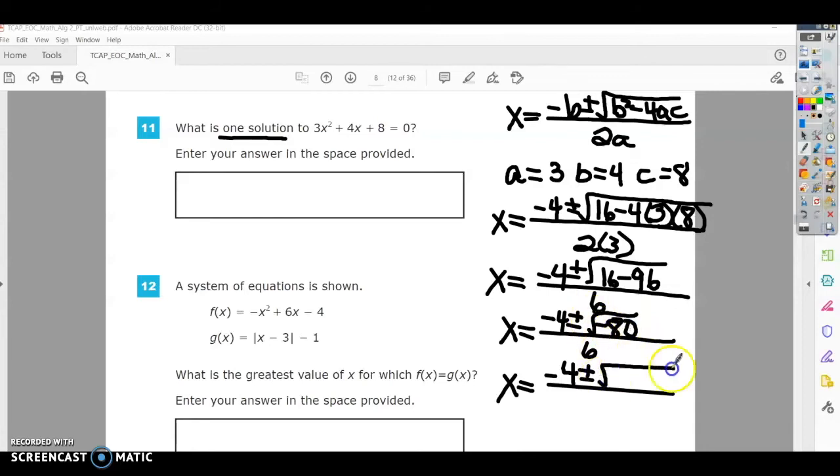So I'm going to rewrite this as negative 16 times 5. And then finally, I'm going to pull out the negative 16. Remember, when it's negative, you get an i,